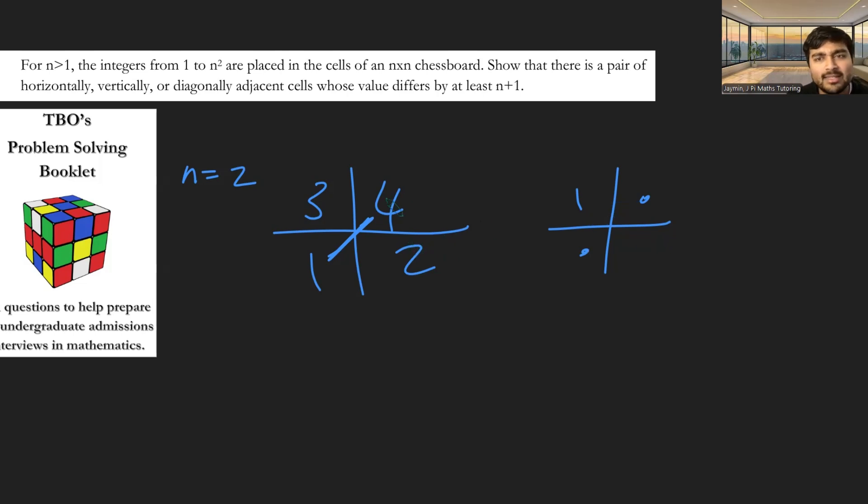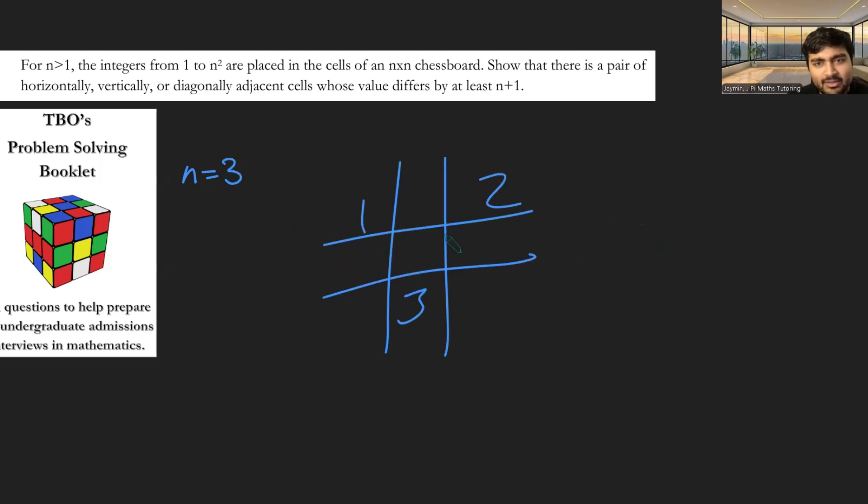Okay, let's do 3×3. Does it work similarly there? So if I take n is 3, and draw a 3×3 grid, and I'm just going to put these numbers in randomly, 1, 2, 3, 4, 5, 6, 7, 8, 9, I don't know, something like this.